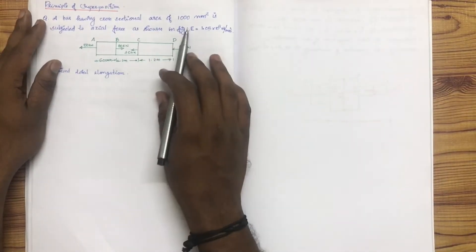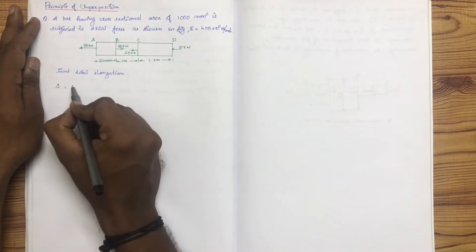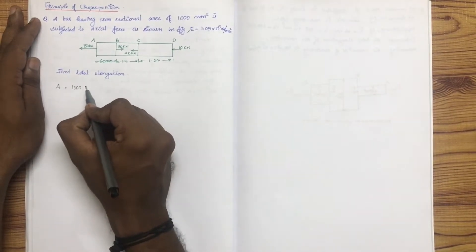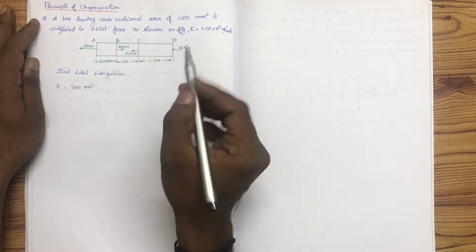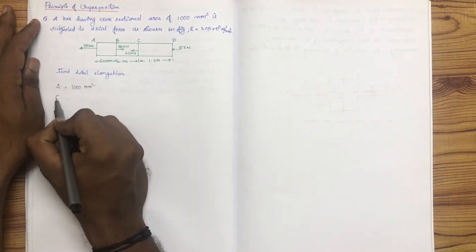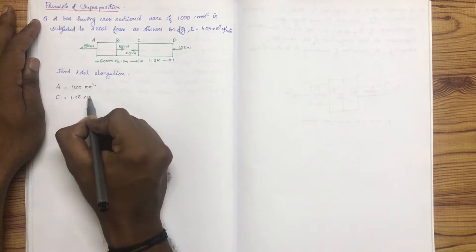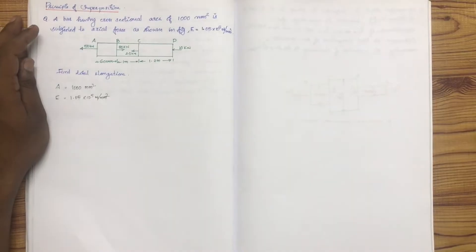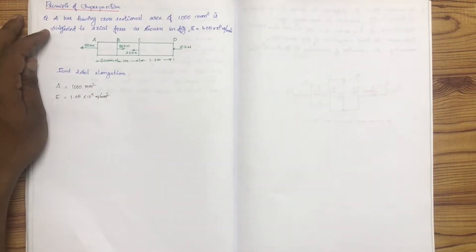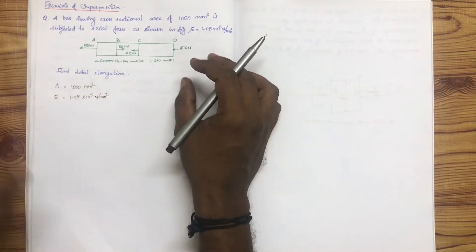A bar having cross-section area of 1000 mm². It is subject to axial force. E is equal to 1.05 × 10⁵ Newton per mm². What are we doing here? I am going to show you the total elongation. There are 3 sections: A, B and C.